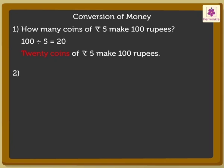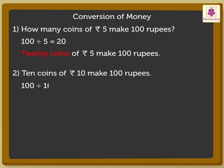Similarly, 10 coins of 10 rupees make 100 rupees. Think — 100 divided by 10 is equal to 10.